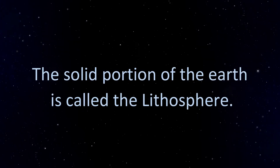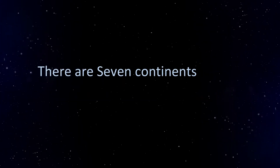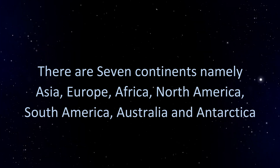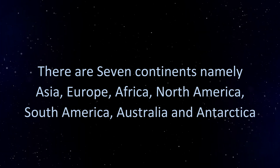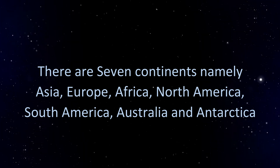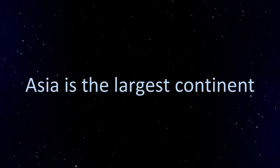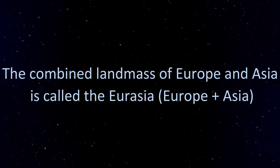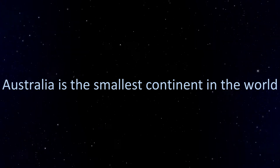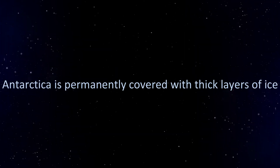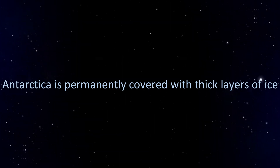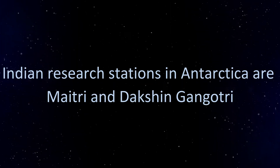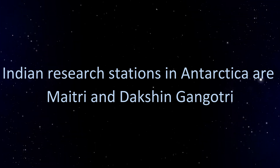What did we learn? The solid portion of the Earth is called the lithosphere. There are seven continents: Asia, Europe, Africa, North America, South America, Australia and Antarctica. Asia is the largest continent. The combined landmass of Europe and Asia is called Eurasia. Australia is the smallest continent in the world. Antarctica is permanently covered with thick layers of ice. Indian research stations in Antarctica are Maitri and Dakshin Gangotri.